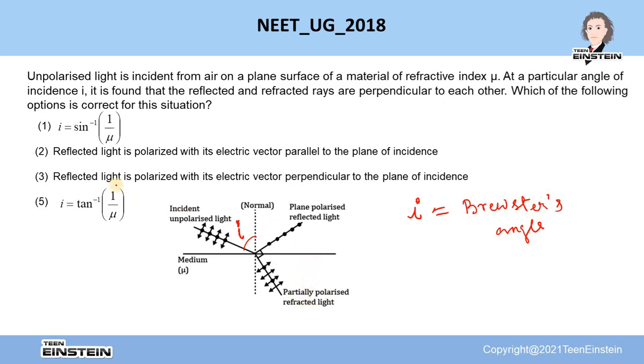So therefore, out of these two options, third option is the correct. Reflected light is polarized with its electric vector perpendicular to the plane of incidence.